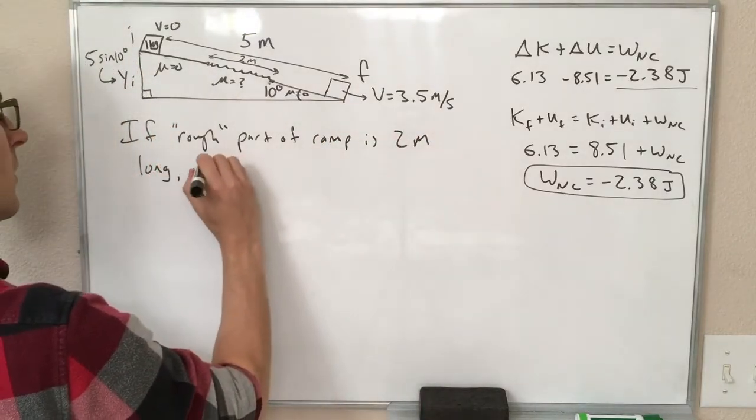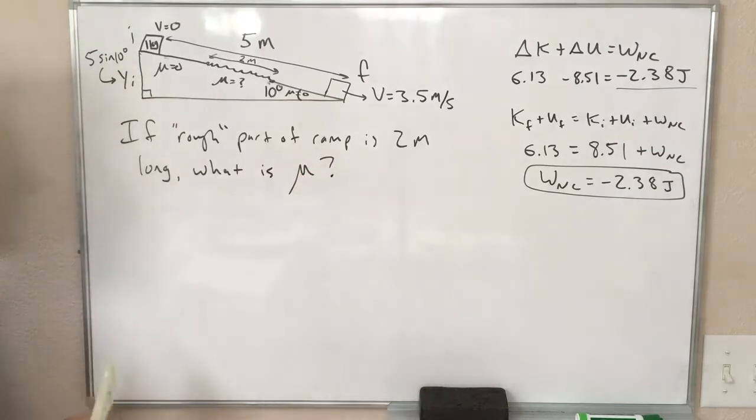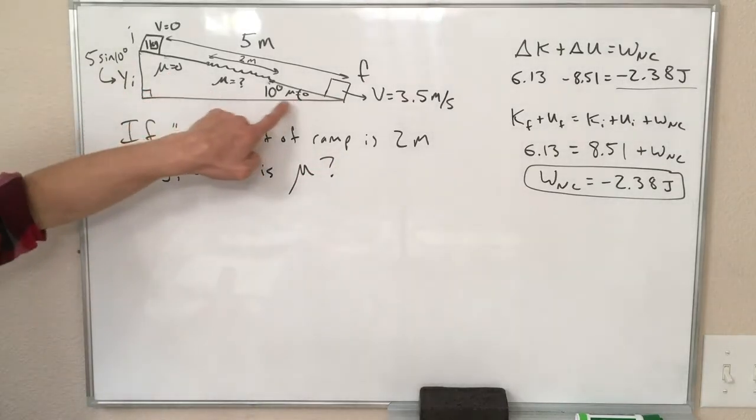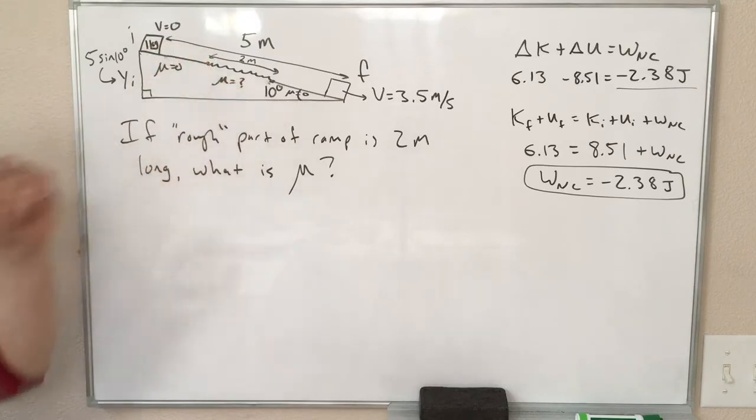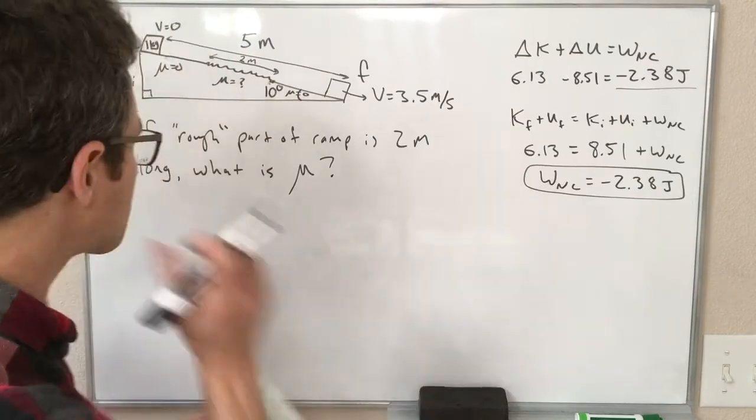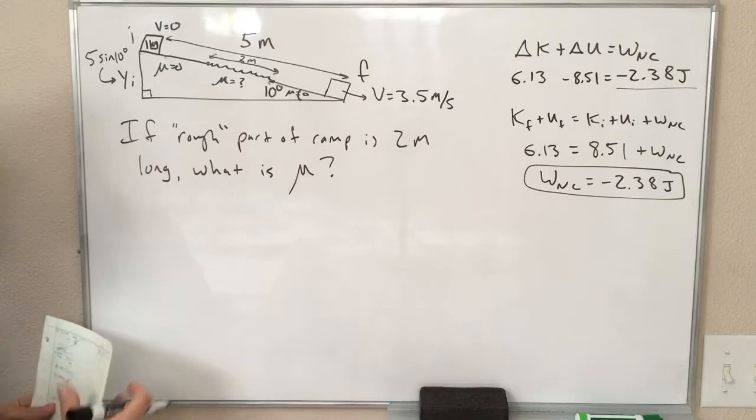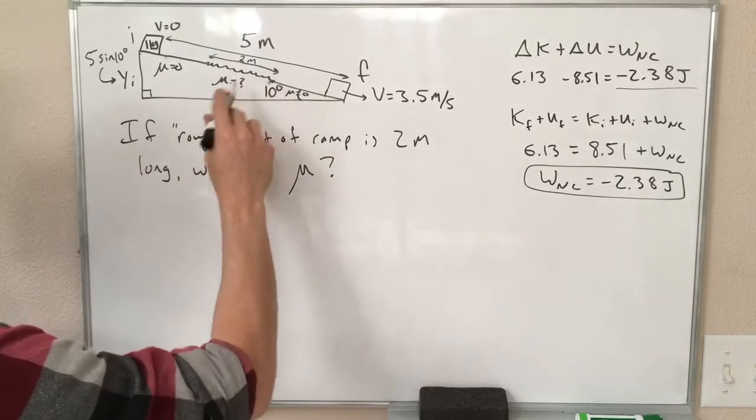And this part of the ramp—the rough part of the ramp—is 2 meters long. So if that's the case, if the rough part of the ramp is 2 meters long, what is its friction coefficient? So mu is 0 here, mu is 0 here, here there is some unknown value for that 2 meter stretch. So we can actually use the non-conservative work to figure this out. And that's—and I'll show you how.